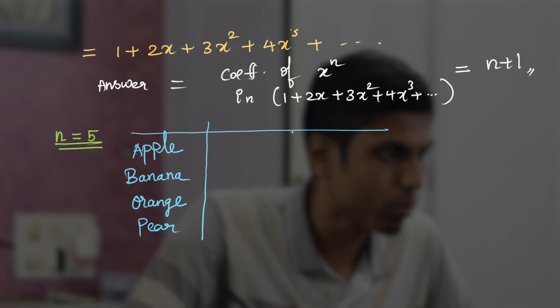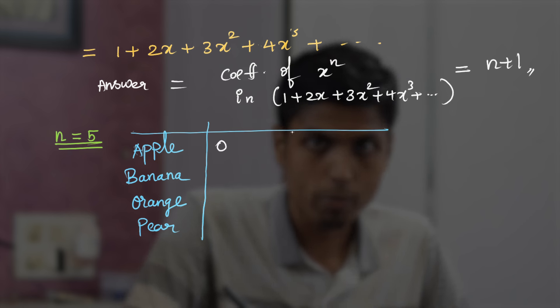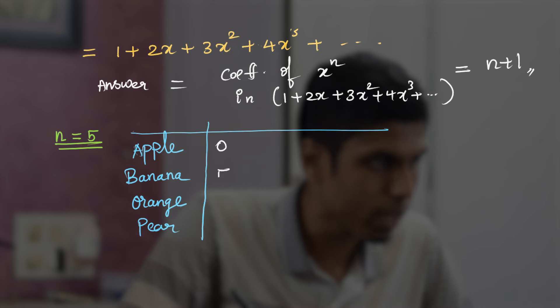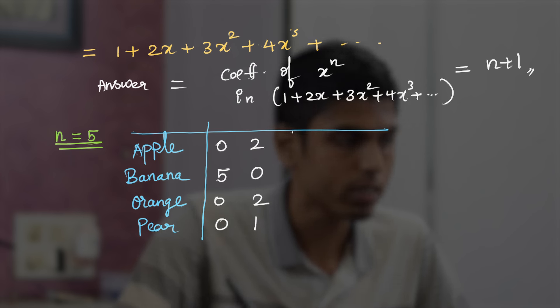So under that constraint, if you create a table: apple, banana, and you have orange, pear. So let's see the number of possible ways. You can have 0 apples because 0 is even and 5 bananas and no orange or pear. Or you can have 2 apples and you can have 0 bananas and 1 pear and 2 oranges.